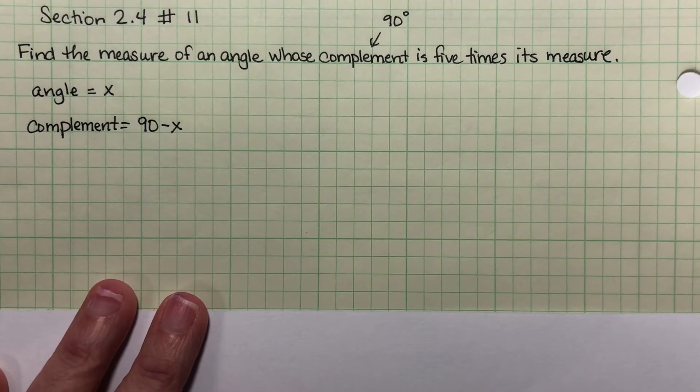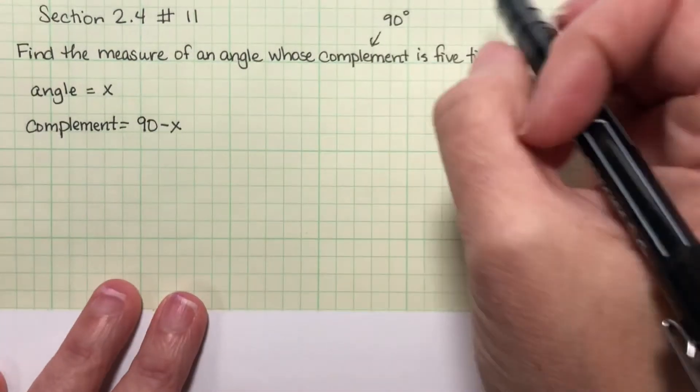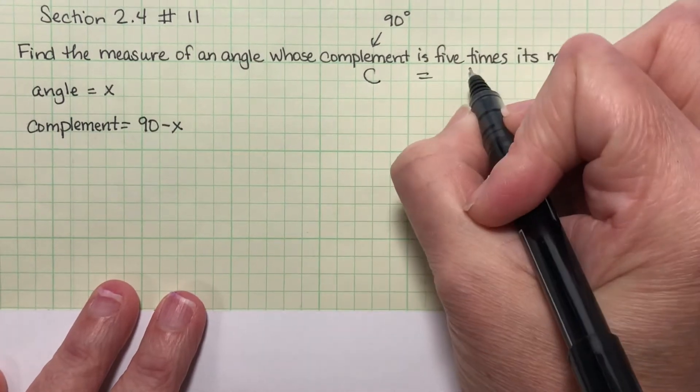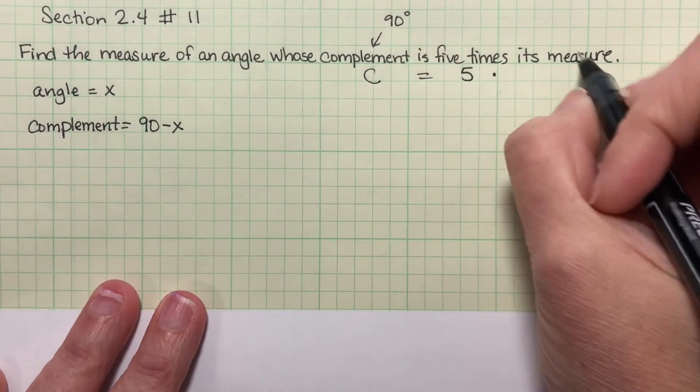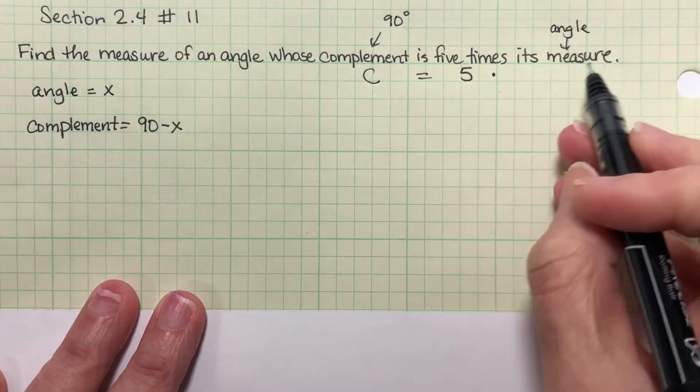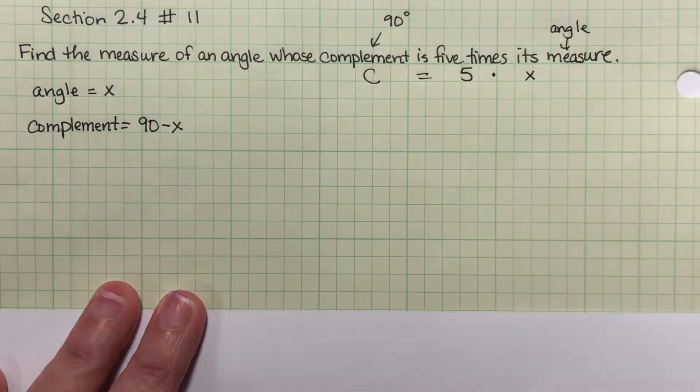Okay, let's look here and come up with a plan. The complement is 5 times its measure, which is the angle, right? And the measure of the angle is X.